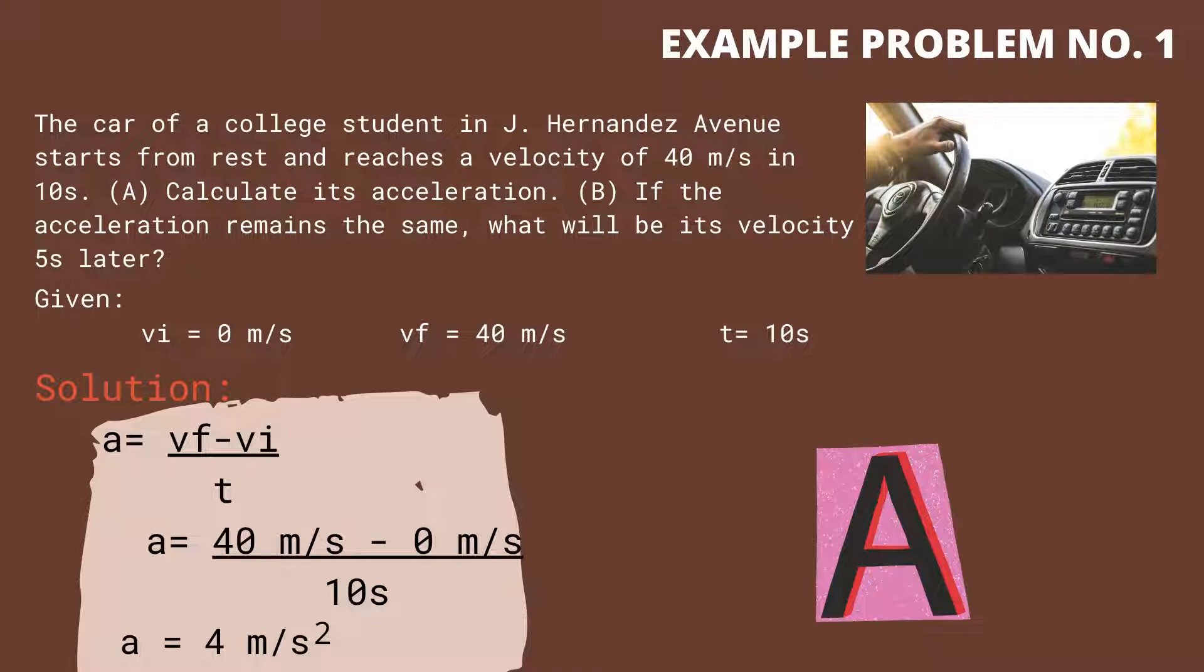To compute the acceleration, we will use the formula a equals v sub f minus v sub i divided by t. Substituting all the values, we get the acceleration which equals 4 meters per second squared.